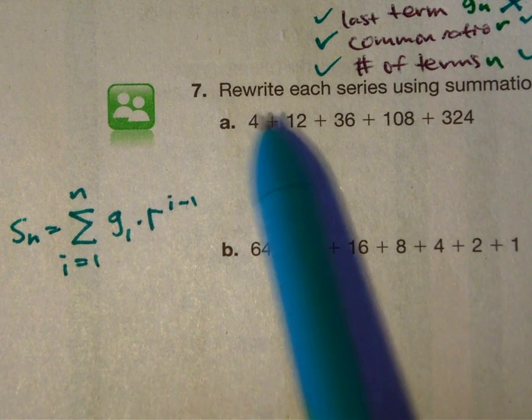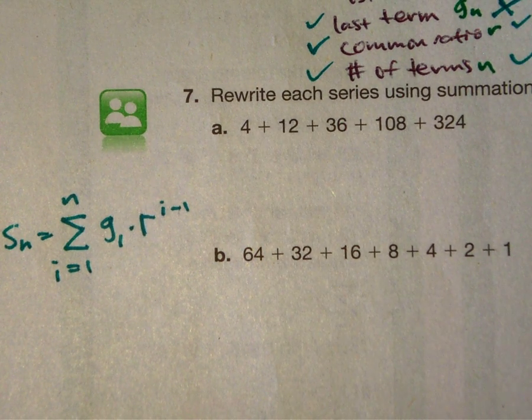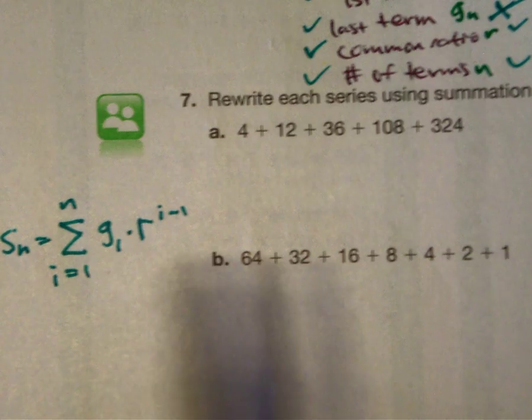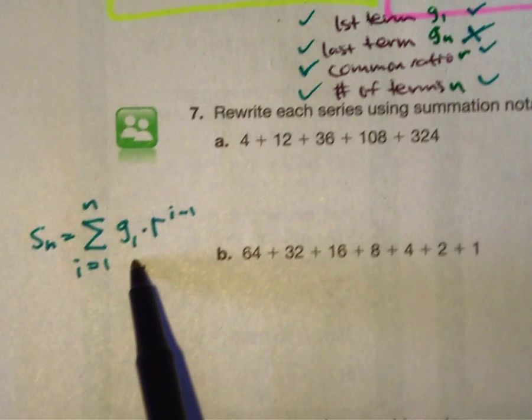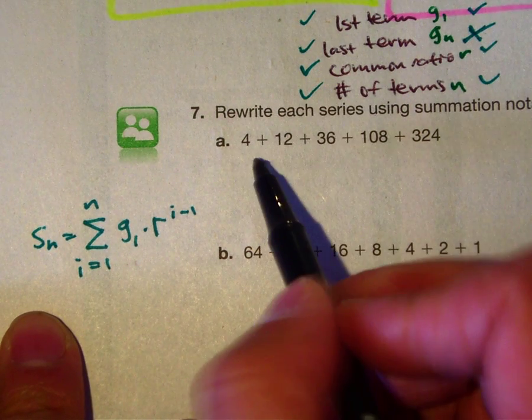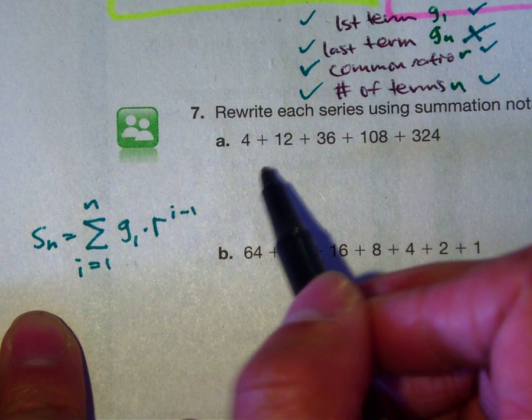In this problem it tells us to rewrite each series using summation notation. We just wrote down summation notation and probably the first thing I'm going to do is label these. Well, I need to figure out if this is geometric or arithmetic or neither.